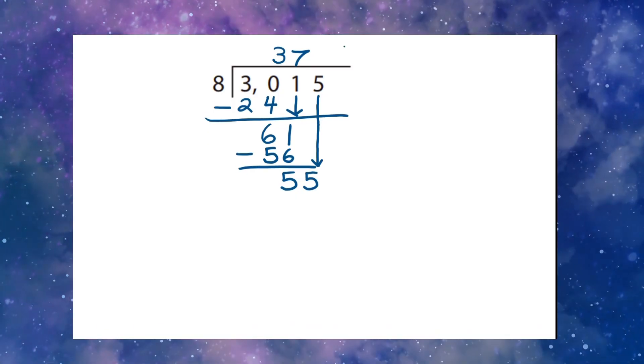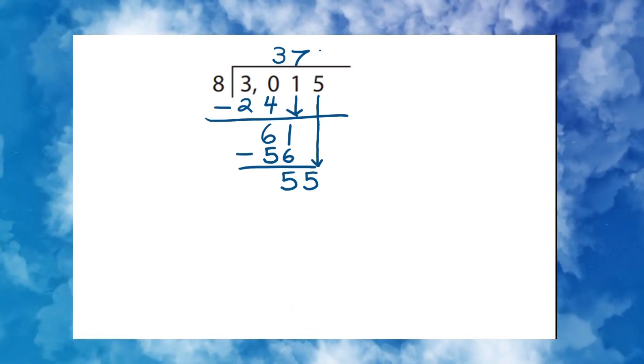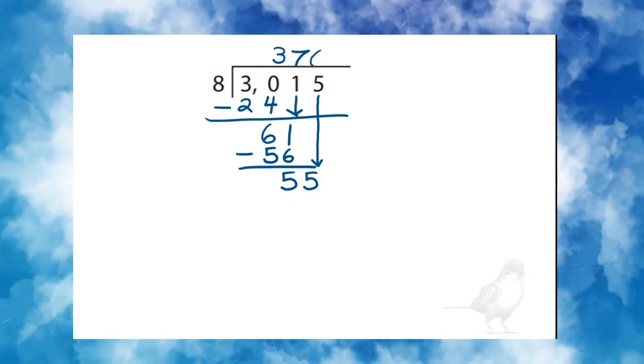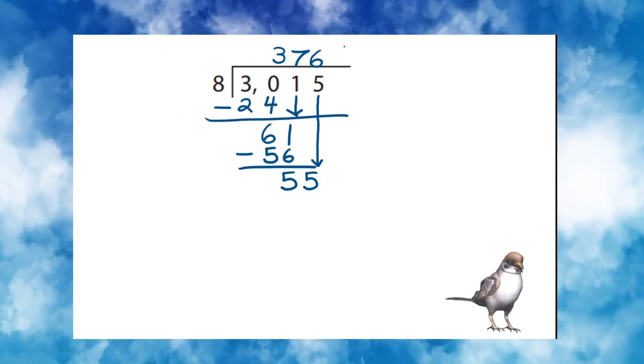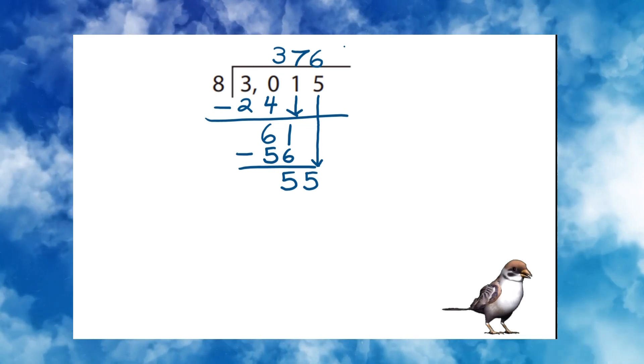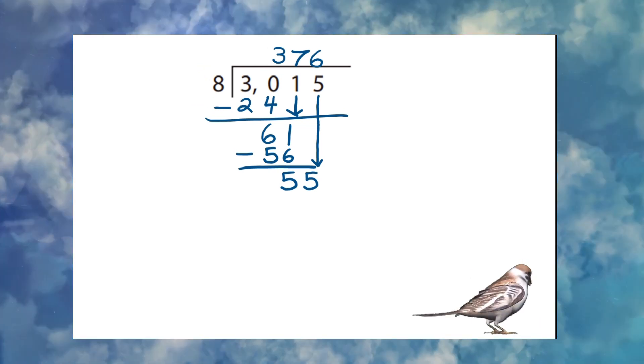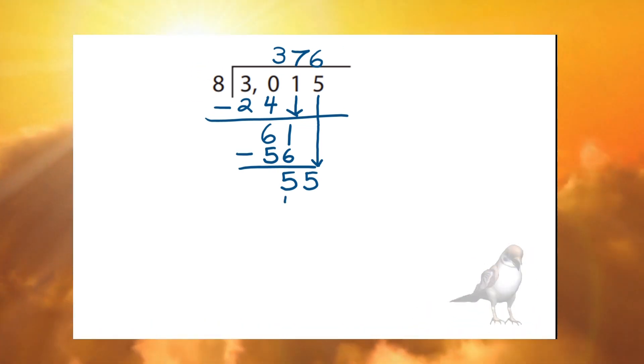And we know that the answer has been with us all along. For the answer is six. Six times eight is forty-eight.